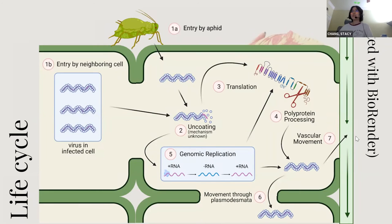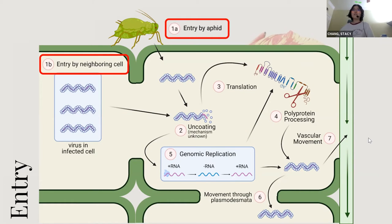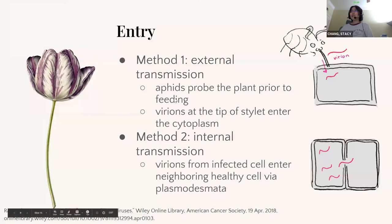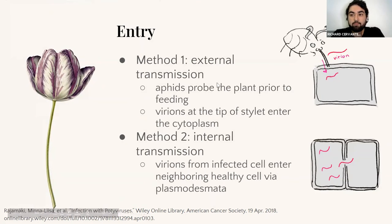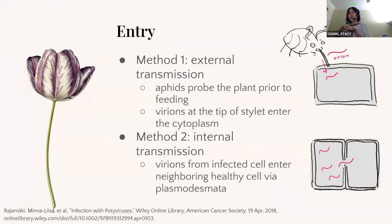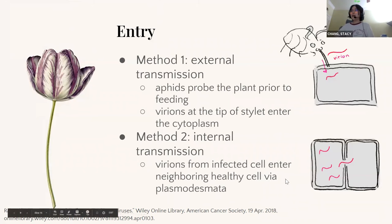Now we'll start talking about the life cycle of this virus. Like any other virus, the first step of the potyvirus life cycle is to actually enter the host cell. The potyvirus has two ways of doing this. One is from the outside — aphids that feed on these plants poke around and probe the plant prior to feeding, which pokes holes in the cell wall and then the virion can just slip in. And if going from an already infected cell in another part of the plant, they can enter via the plasmodesmata.